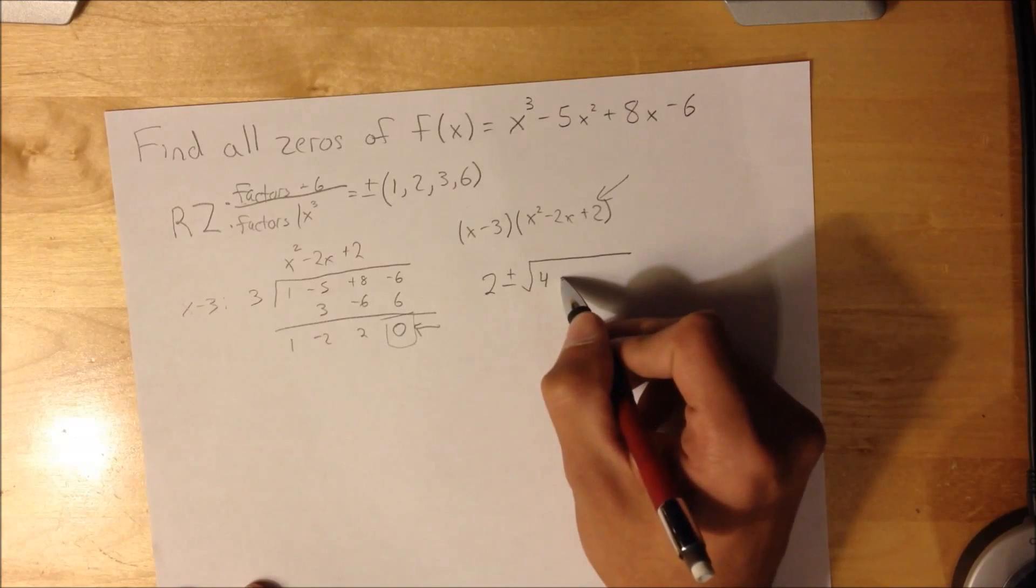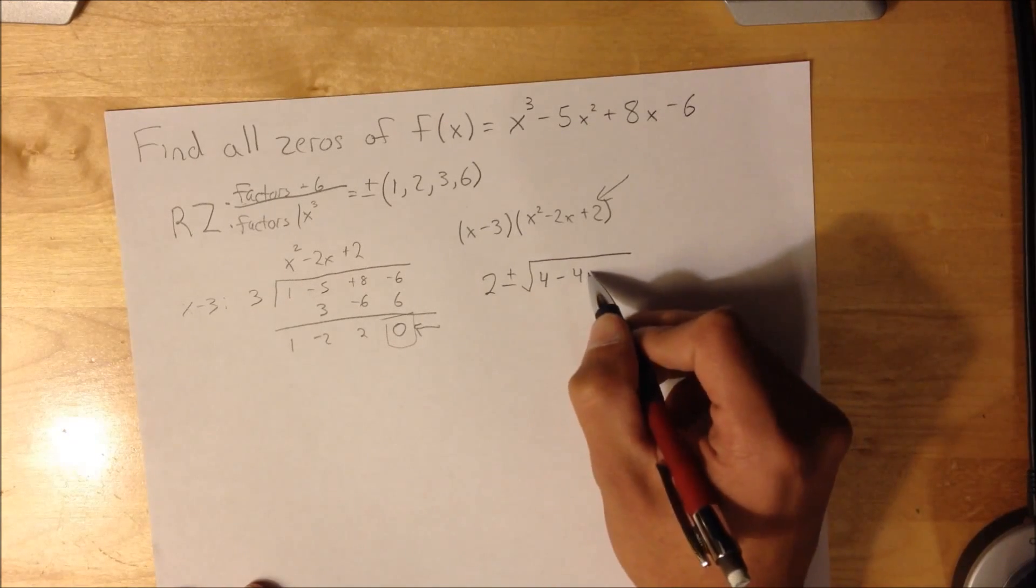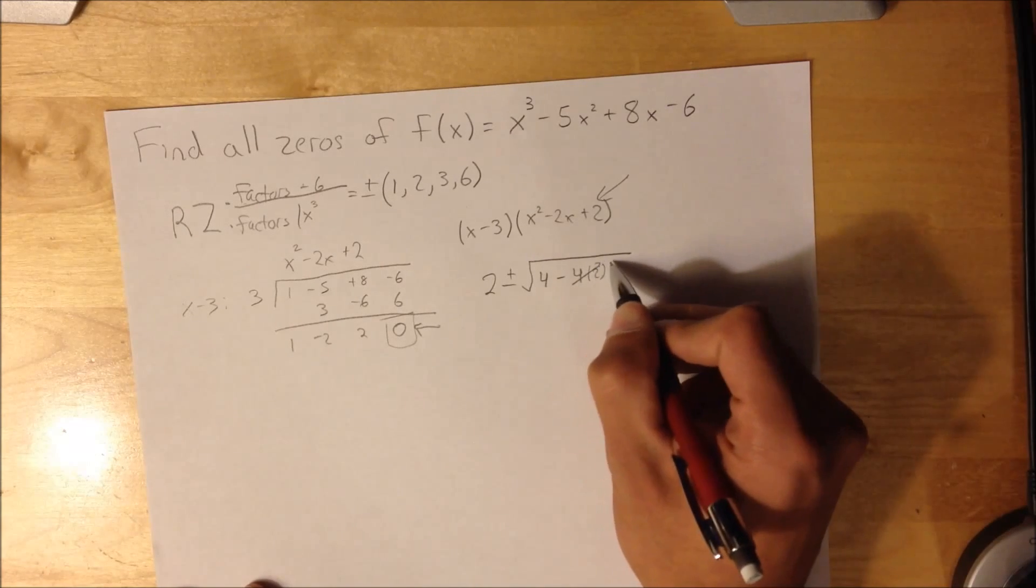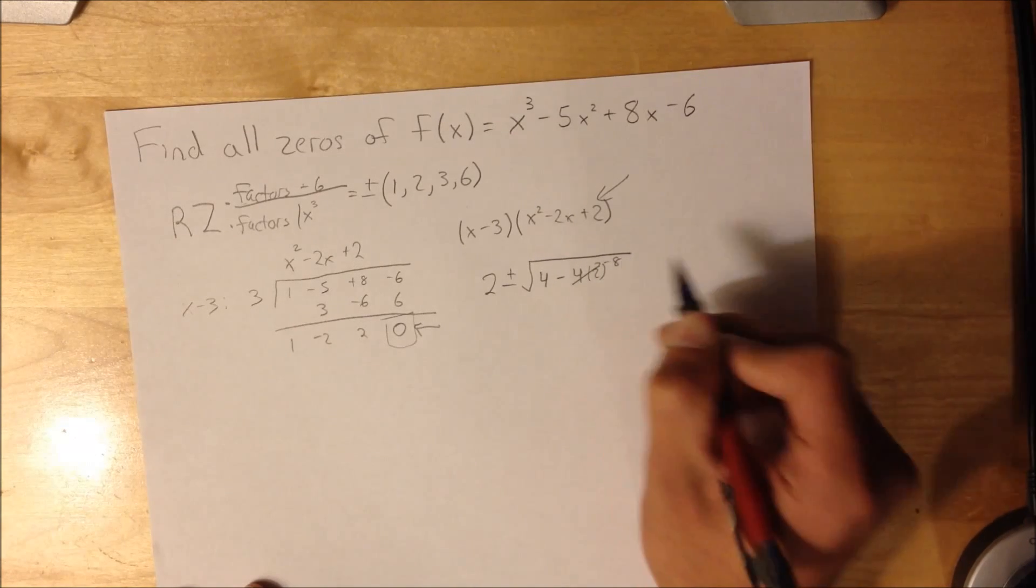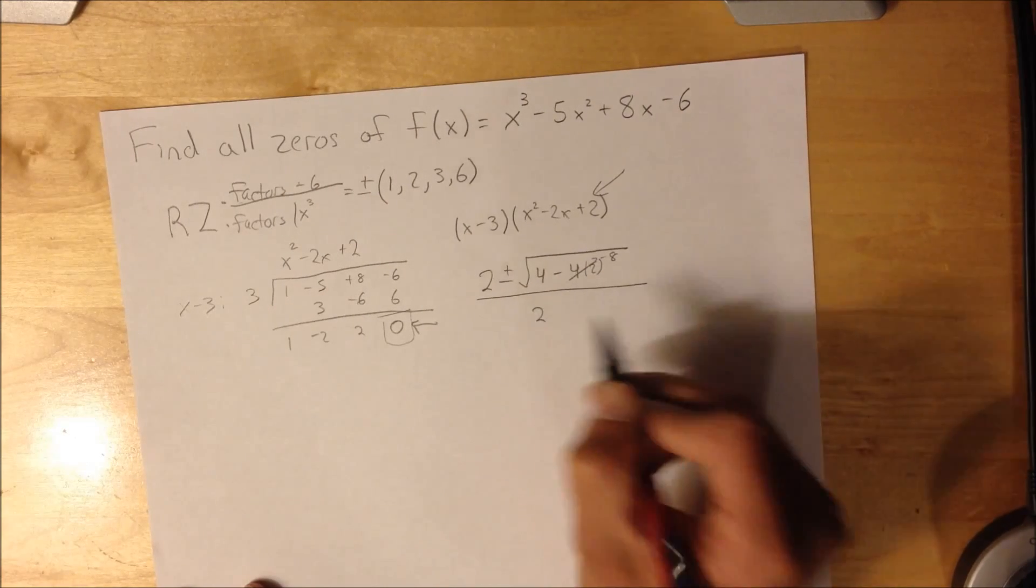So, this is going to be 4 minus 4 times 2, which is -8, all over 2.